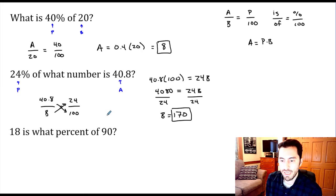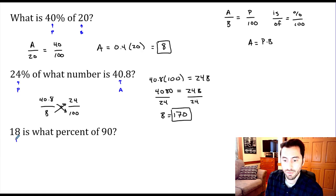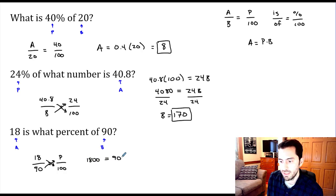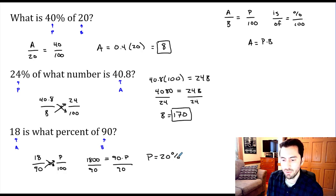Example three: '18 is what percent of 90?' We're solving for the rate. '18 is' means 18 is our amount; 'of 90' means 90 is our base. Proportion: 18 over 90 equals percent over 100. Cross-multiplying: 18 times 100 equals 1800, equal to 90 times percent. Dividing by 90 gives percent equals 20. We include the percent sign here because the proportion gives a whole number. So 18 is 20 percent of 90.